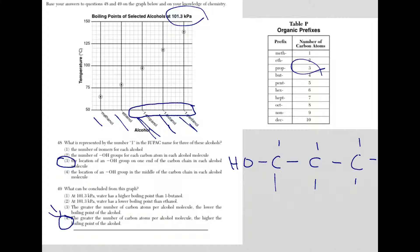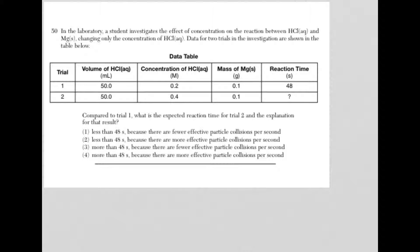Let's move to question 50. For question 50, we're dealing with two different trials from a student investigation, and we're looking at the effect of concentration on the reaction between HCl and Mg, changing only the concentration of HCl, compared to trial 1. What is the expected reaction time for trial 2, and the explanation for that result? The answer for question 50 was 2, but let's take a look at what we have here.